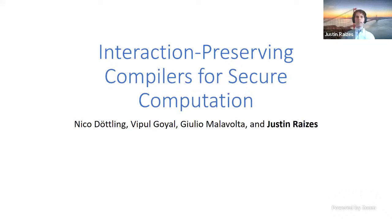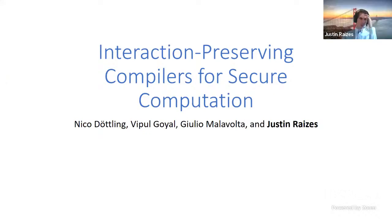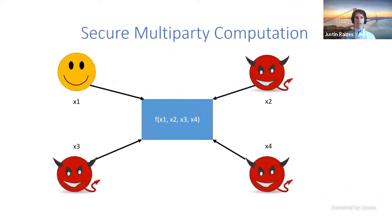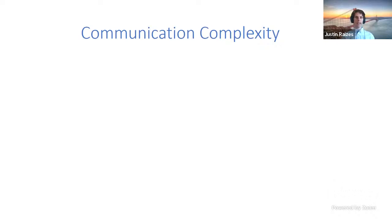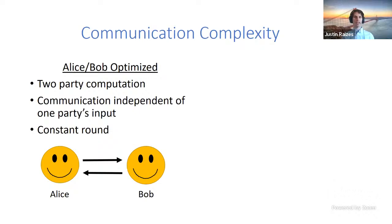This talk is about secure multi-party computation where parties provide private inputs and receive an output. The security guarantee is that no information about the inputs is revealed except for the output. We are also concerned with the setting where all but one party can be corrupted. There has been a lot of work on optimizing communication complexity of secure computation.